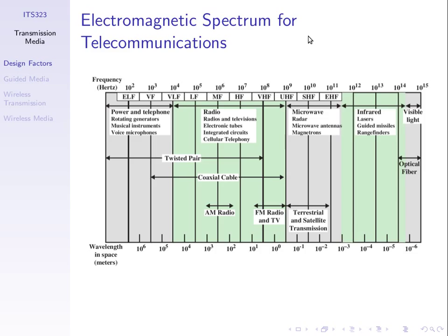Within this broad spectrum, governments create laws specifying who can use particular frequencies. For example, with mobile phones and 3G in Thailand, the government makes certain frequencies available and companies pay for licenses to use them. Only licensed companies are allowed to transmit on those frequencies, preventing interference.